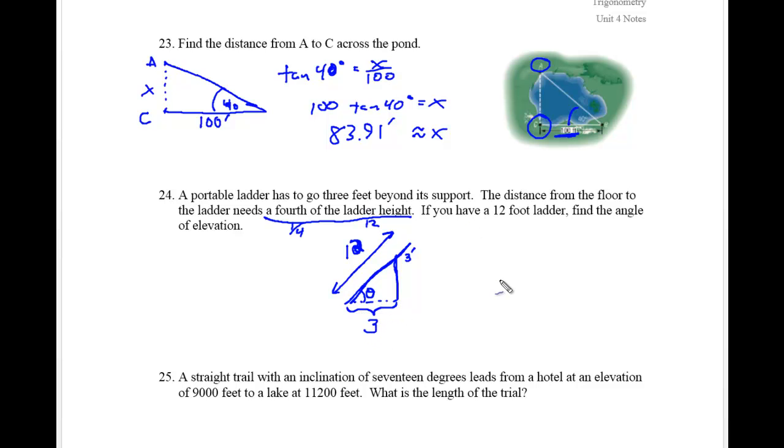So to redraw your picture again here, if we drew the picture here, this would be 3. And this would be this distance from here to here would be 9. And the reason why it would be 9 is because remember, we have a 12 foot ladder that has to go three feet beyond. So we're going to find that angle theta right there.